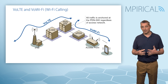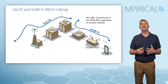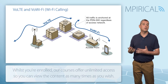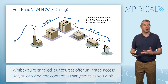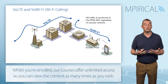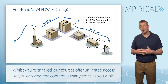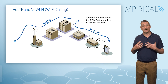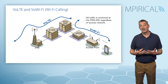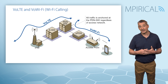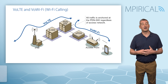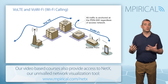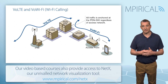This is particularly important because our PDN gateway acts as our anchor point, and therefore as the mobile moves between Wi-Fi and LTE, our traffic will still remain anchored through the same PDN gateway. In other words, the mobile can maintain an IP address which is stored at the PDN gateway, and therefore as far as our external servers are concerned, there is no change as the mobile switches between the different access networks.